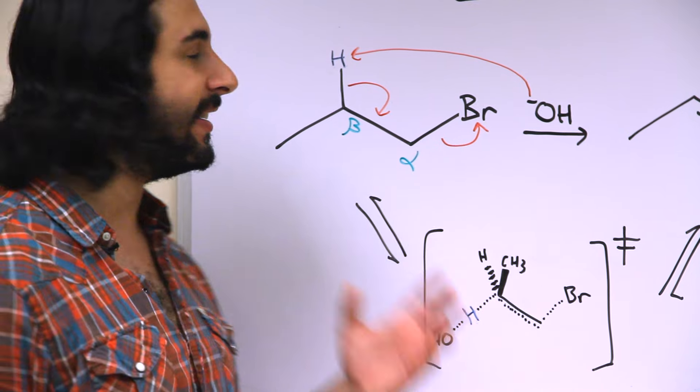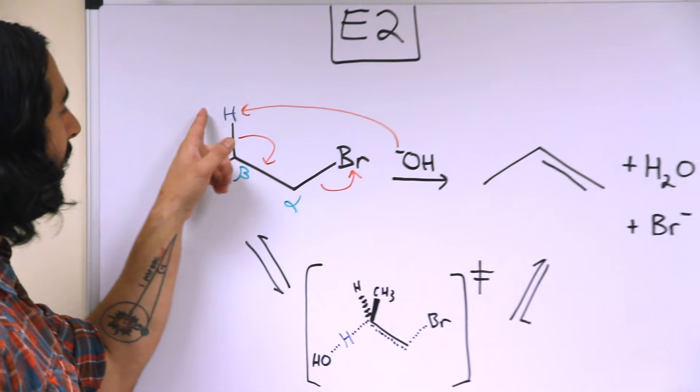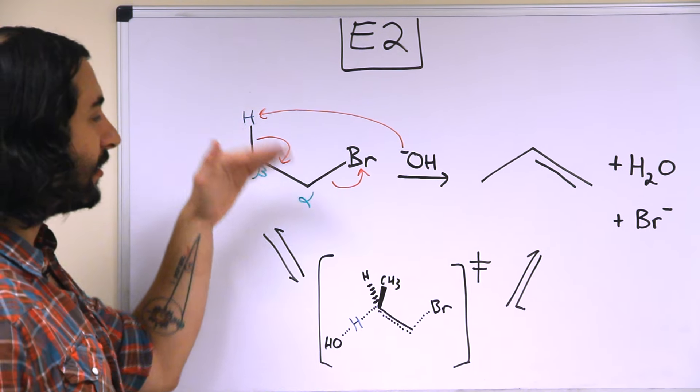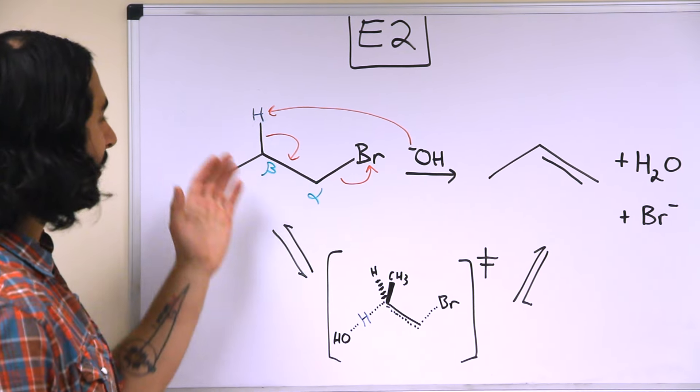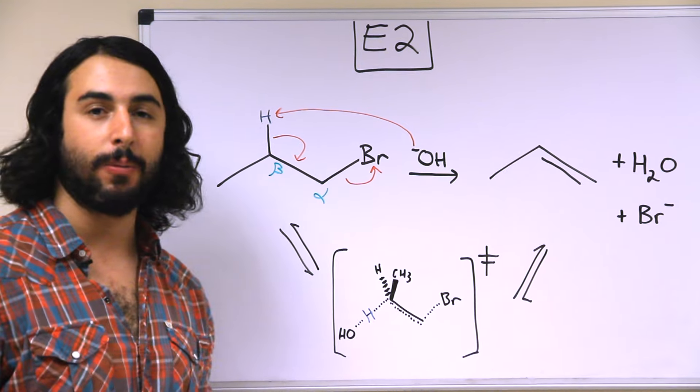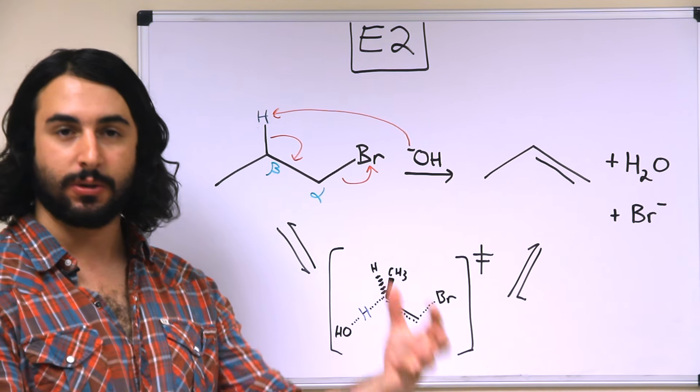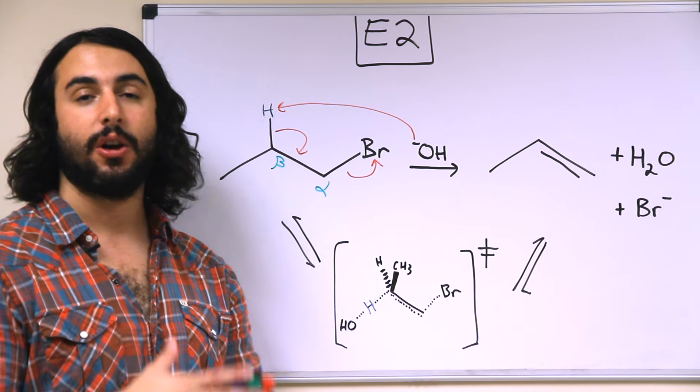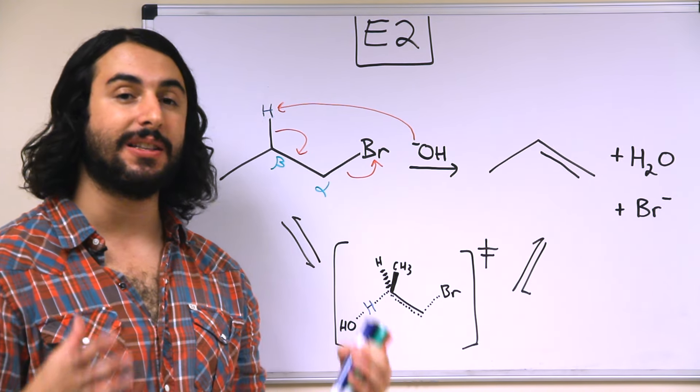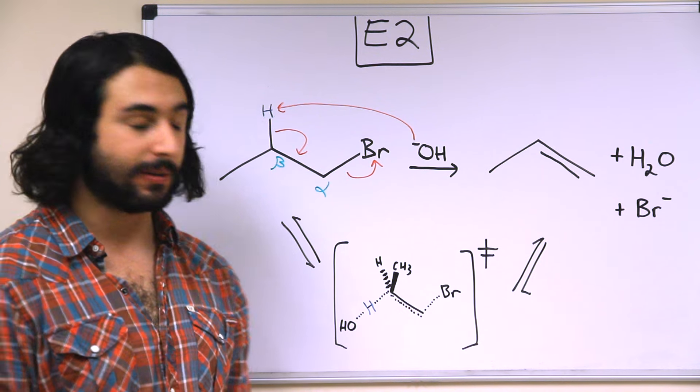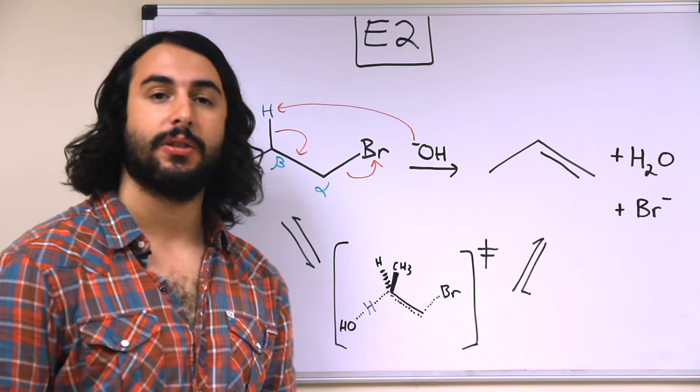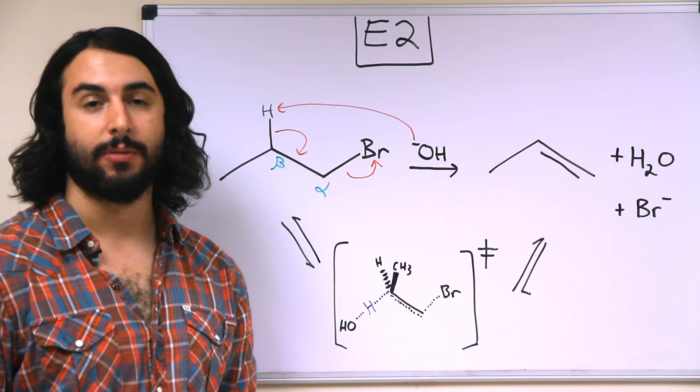So this happens all at once. It is not the case that the hydroxide extracts the proton, then at a later time the electrons go to form the pi bond and then once the pi bond is being formed, the carbon realizes it has too many bonds and loses the bond to the leaving group. That's not the case. In fact, all of these bonds are materializing and dematerializing at once. So there's the transition state and then the final product with the pi bond in place.